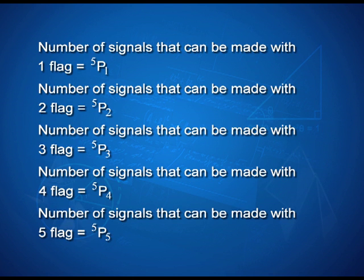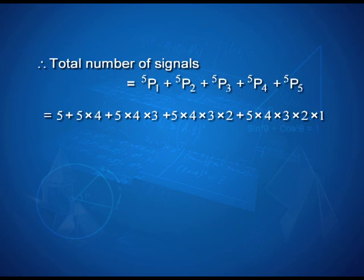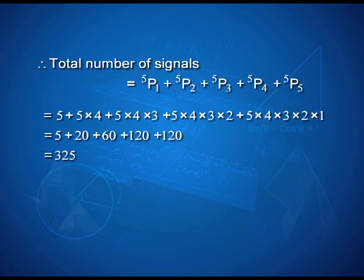Because the flags are taken either 1, 2, 3, 4, or 5 at a time, the addition principle applies — these ways are not multiplied, they are added. Calculating each: 5P2 = 5! / 3! = 5 × 4 = 20, and similarly for the others. The total number of signals comes out to be 325.